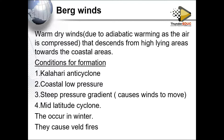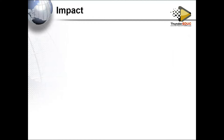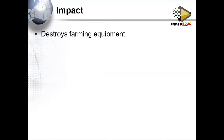Berg winds occur mainly in winter and their main associated hazard is wildfire — natural fires that affect South Africa during the winter season. In terms of impact, the midlatitude cyclone contributes to fires, and fires destroy farming infrastructure and grazing land.